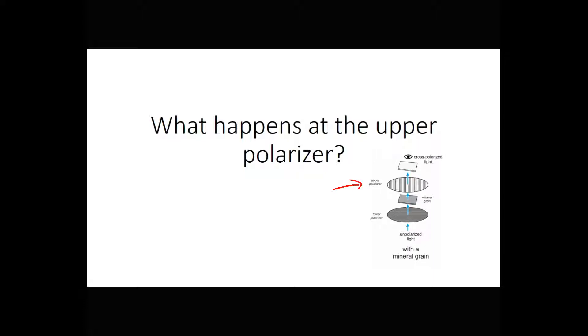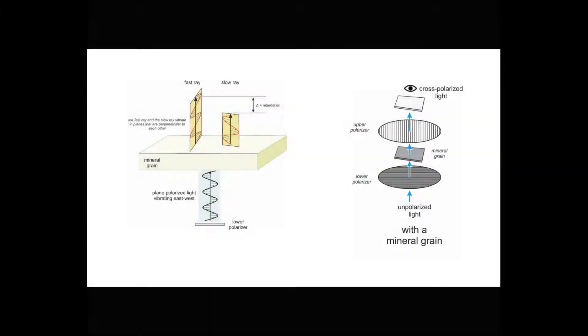In this video, we're going to look at what happens when those two rays reach the upper polarizer. In most microscopes, the lower polarizer produces light that is vibrating east-west, and the upper polarizer only allows light to get through that's vibrating north-south. So if there was no mineral grain in the way, no light could pass through the two filters.